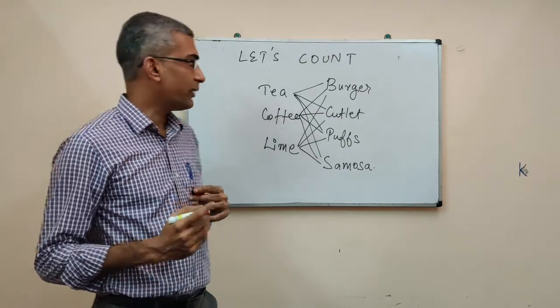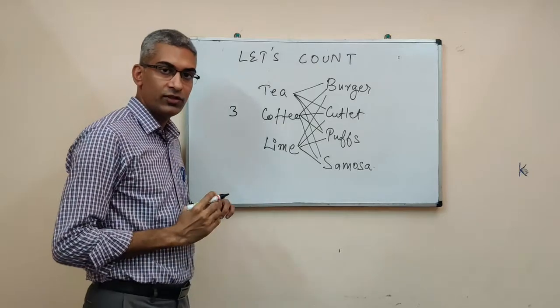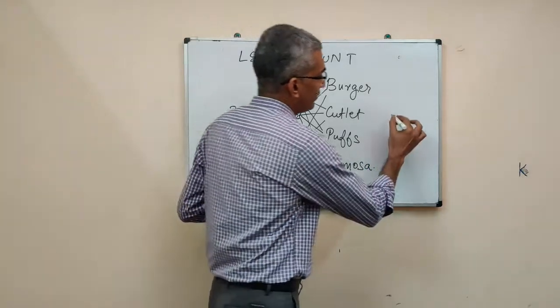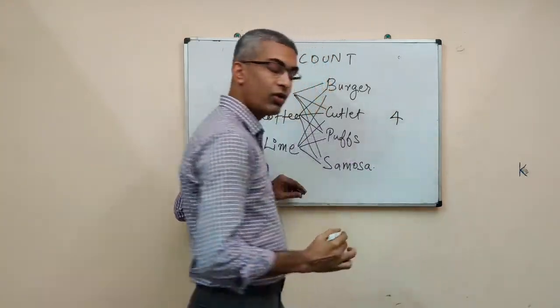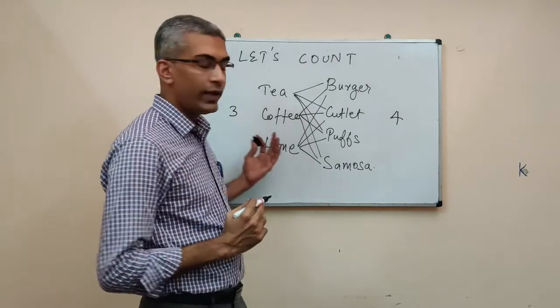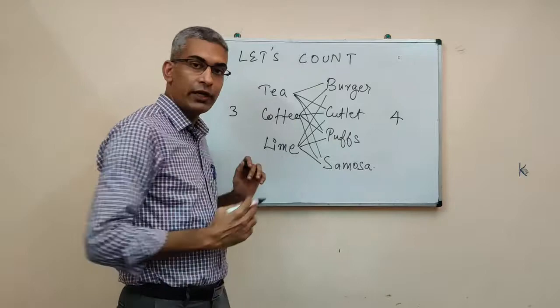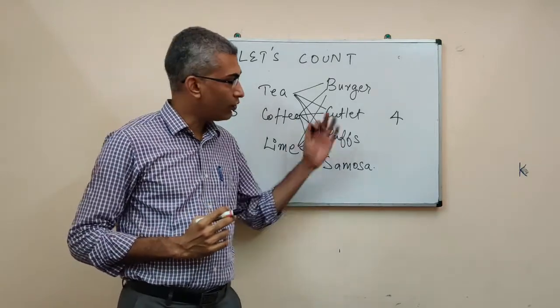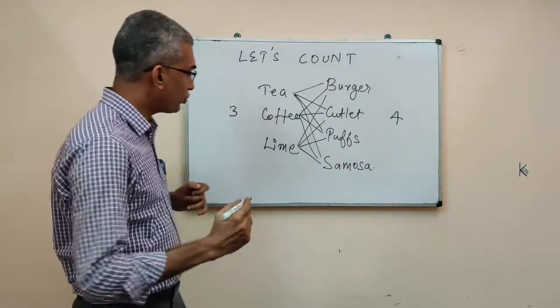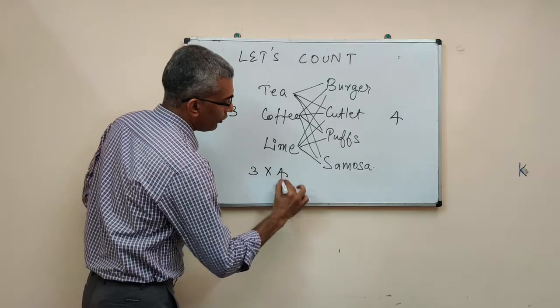Instead, if you look at this mathematically, this thing can be done in three ways. That is, the number of ways in which you can have a drink is three. And this thing can be done in four ways. The number of ways in which you can have a snack is four. So, you wanted to have a drink and a snack. However you have the drink, you can have the snack in four ways. However you have the snack, you can have the drink in three ways.